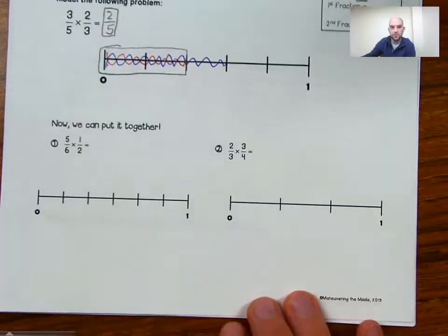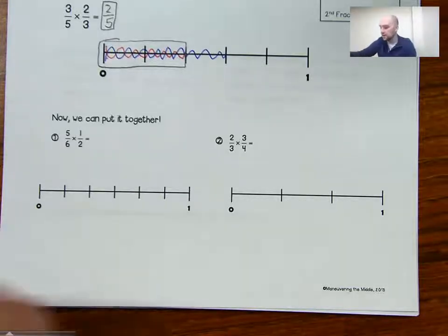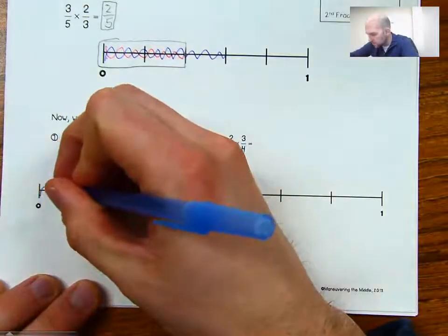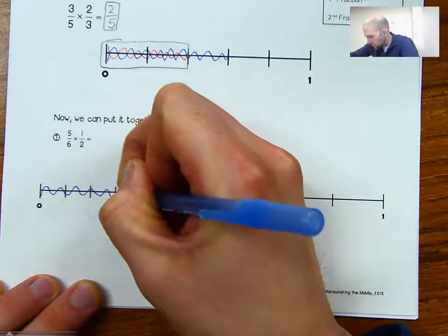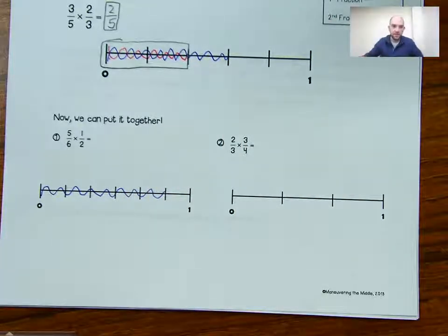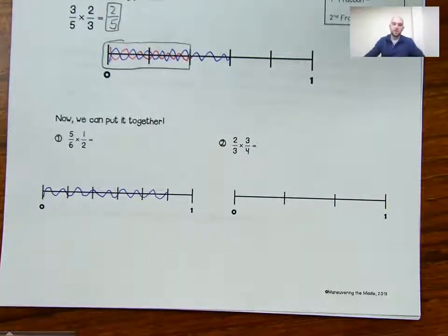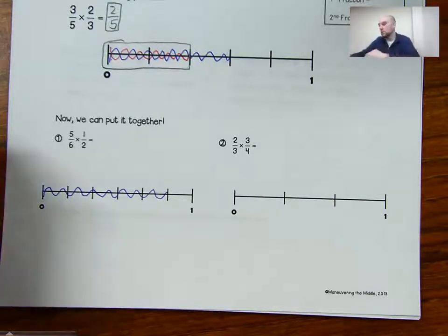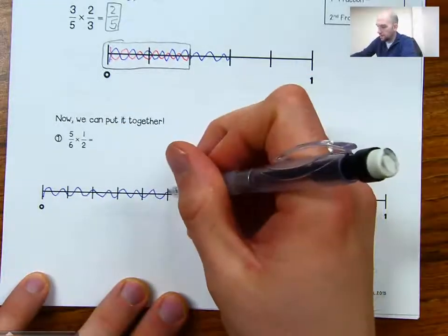So now we'll do another one: five-sixths times one-half, or one-half of five-sixths. The first thing I need to do is shade five of my sixths — one, two, three, four, five. So I have five of my sixths shaded. Of those five pieces, I need to shade a half of them, but I can't break five into two equal parts with whole numbers.